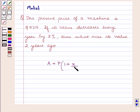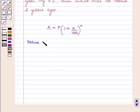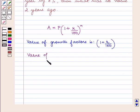The value of the growth factor is (1 + r/100). And the value of decay factor is (1 - r/100).